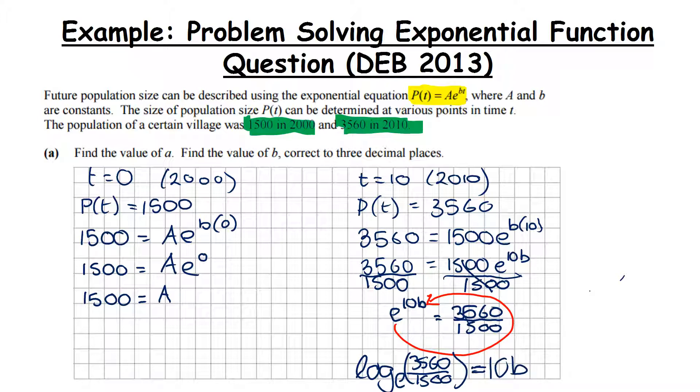We get log to base E of 3560 over 1500 equals 10B. If you're not familiar with the circle method, that's absolutely fine. What the circle method does is it tells us the first thing to put in, the second thing to put in, and the third thing to put in. So the log - the first thing you put in is the base, the second thing is of what number, and then the third bit goes to the other side of the equals. You should get the same answer using the formula on page 12, indices and logarithms. So we're writing log to base E, but this can be shortened to LN. So the natural log of 3560 over 1500 equals 10B. So B is equal to the natural log of 3560 over 1500, all divided by 10.